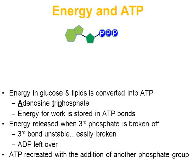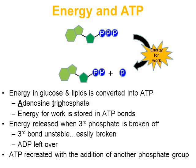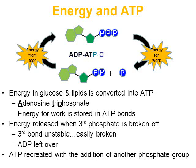Taking another look at an ATP molecule: when that third phosphate is broken off, energy is released for our cells to do work, and you're left with ADP and that broken phosphate. With energy from the food that we eat, that broken phosphate can be reattached to ADP to recreate ATP. This is called the ADP-ATP cycle, and this process continues over and over from birth until death.